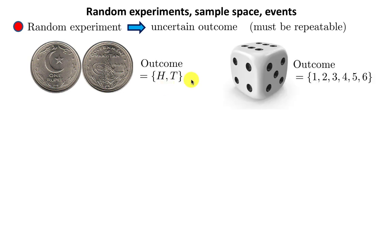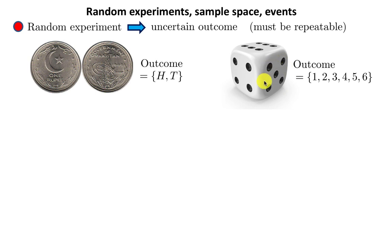Another example: take a die. This die has got 1, 2, 3, 4, 5, 6 dots on its sides, and so we can call the outcomes 1, 2, 3, 4, 5, 6. Of course, if you had different numbers of dots on these sides, these outcomes would have been correspondingly different.